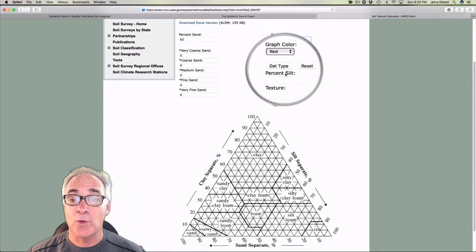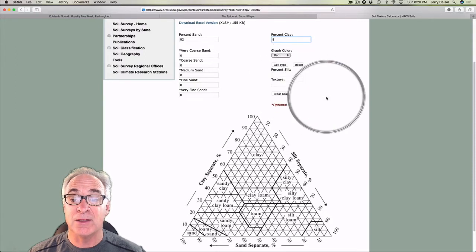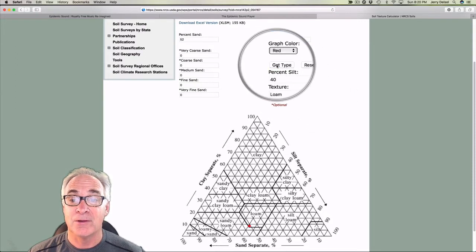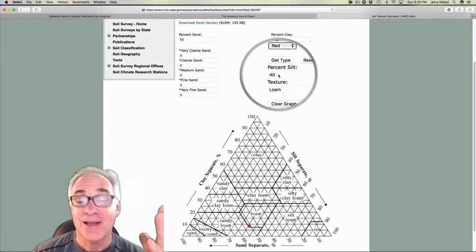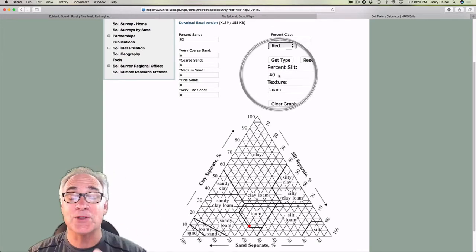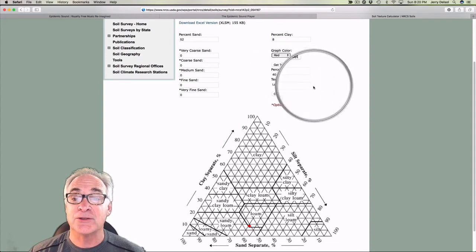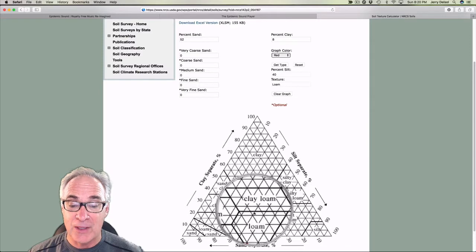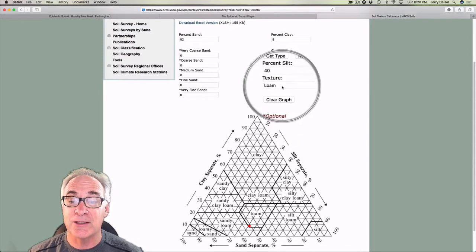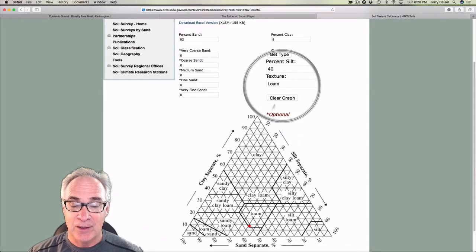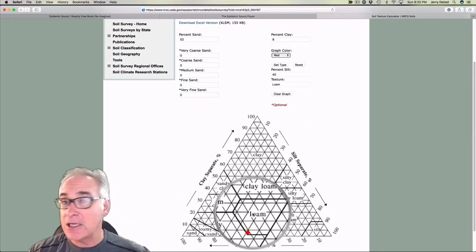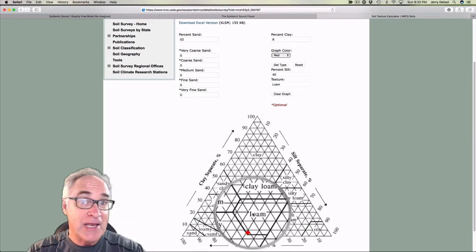And then what you do basically is just hit 'get type' and it puts in the 40% of silt that you're going to need. And then what it does is, look, it draws it. It's going to be a loam. See, it says right there, texture: loam. That is pretty incredible.